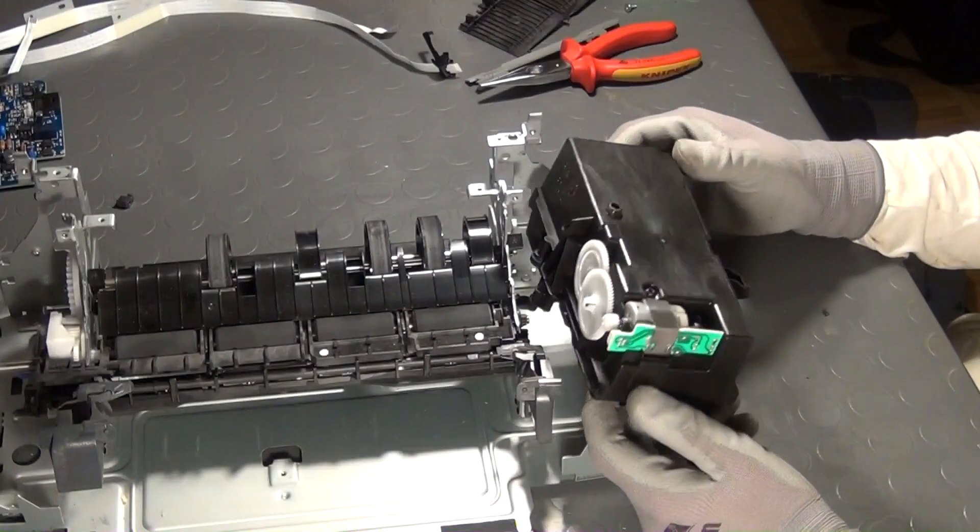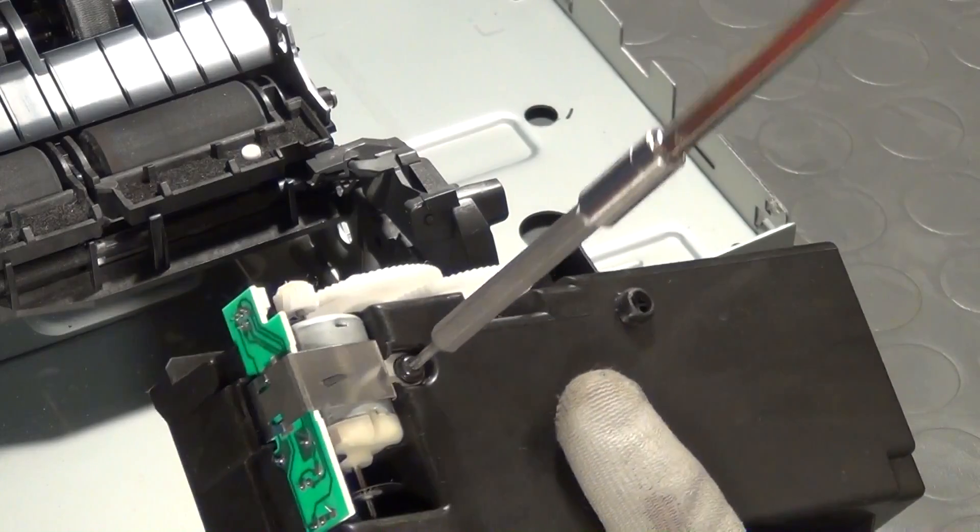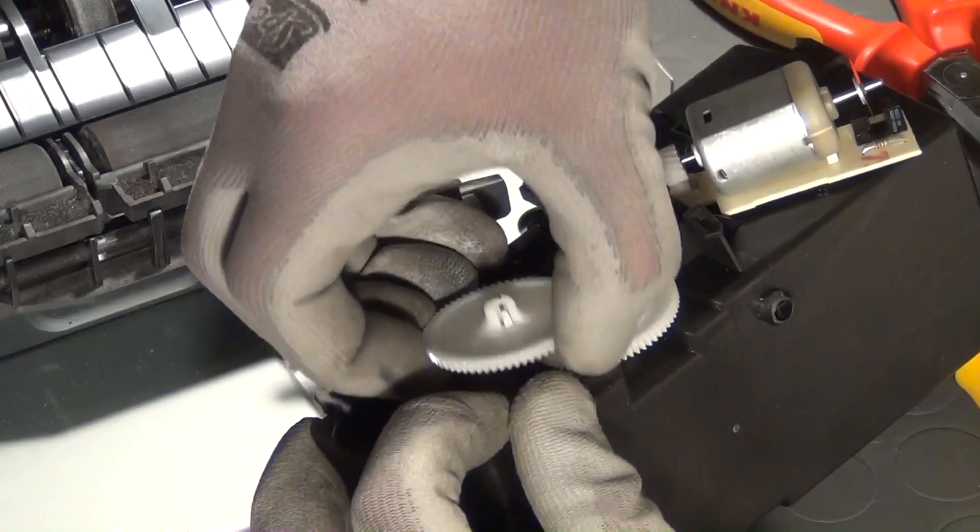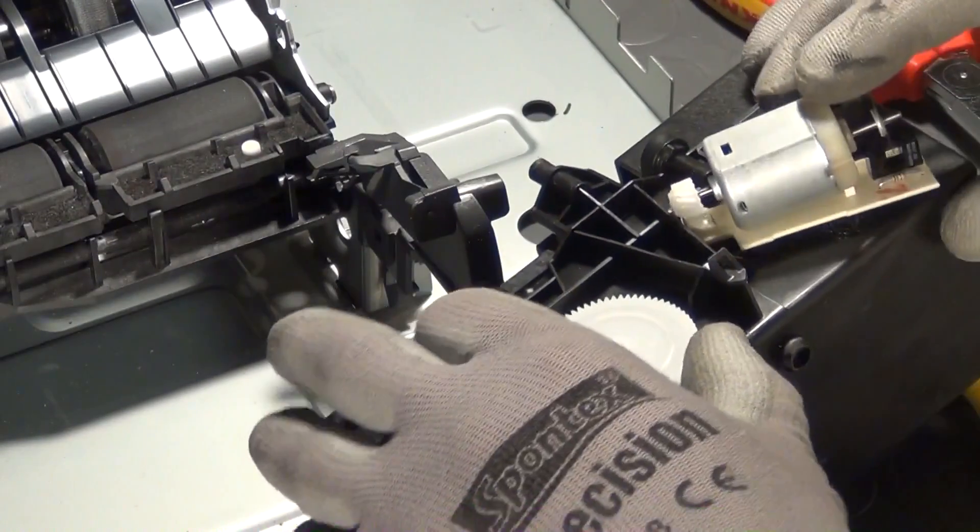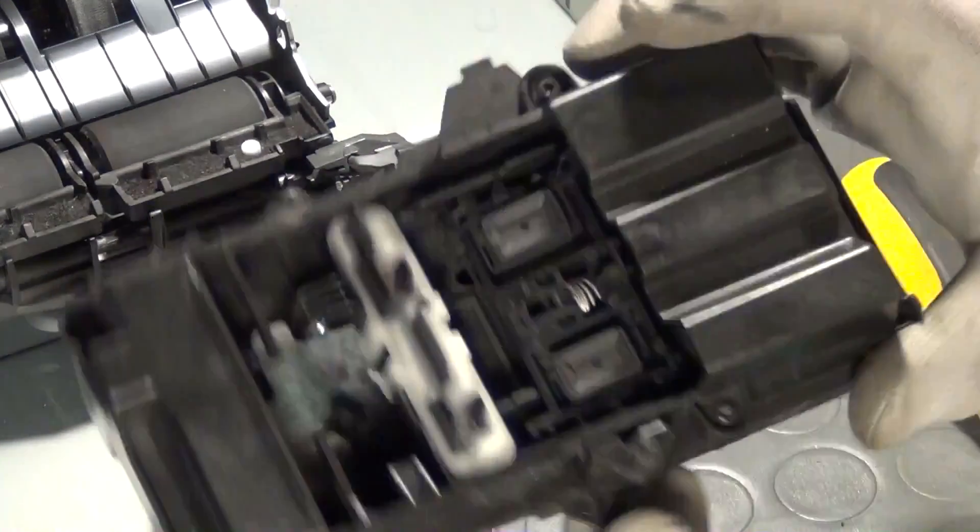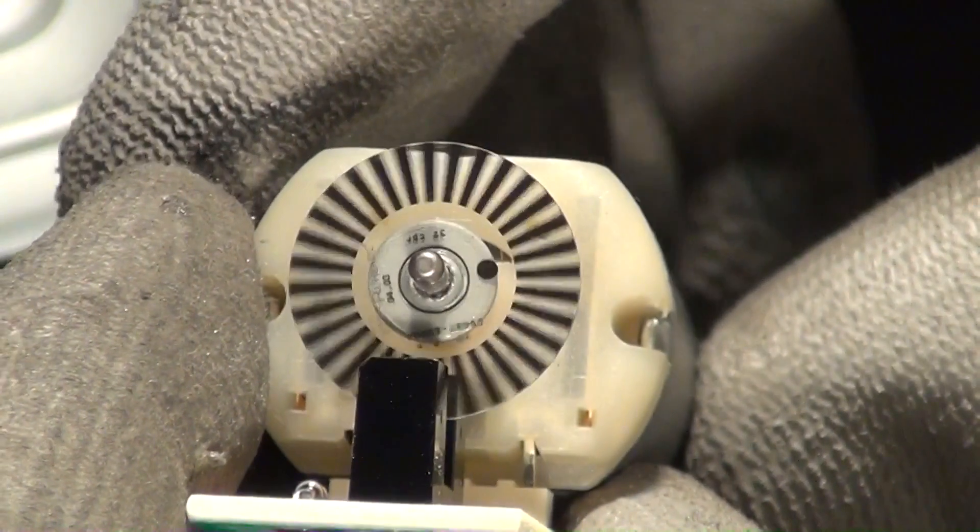At the bottom side of this waste ink tank we find yet another DC motor. We can get it loose by removing just one screw. The wide cogwheels might prove useful too. Do not try to take apart the tank itself. It is a mess.